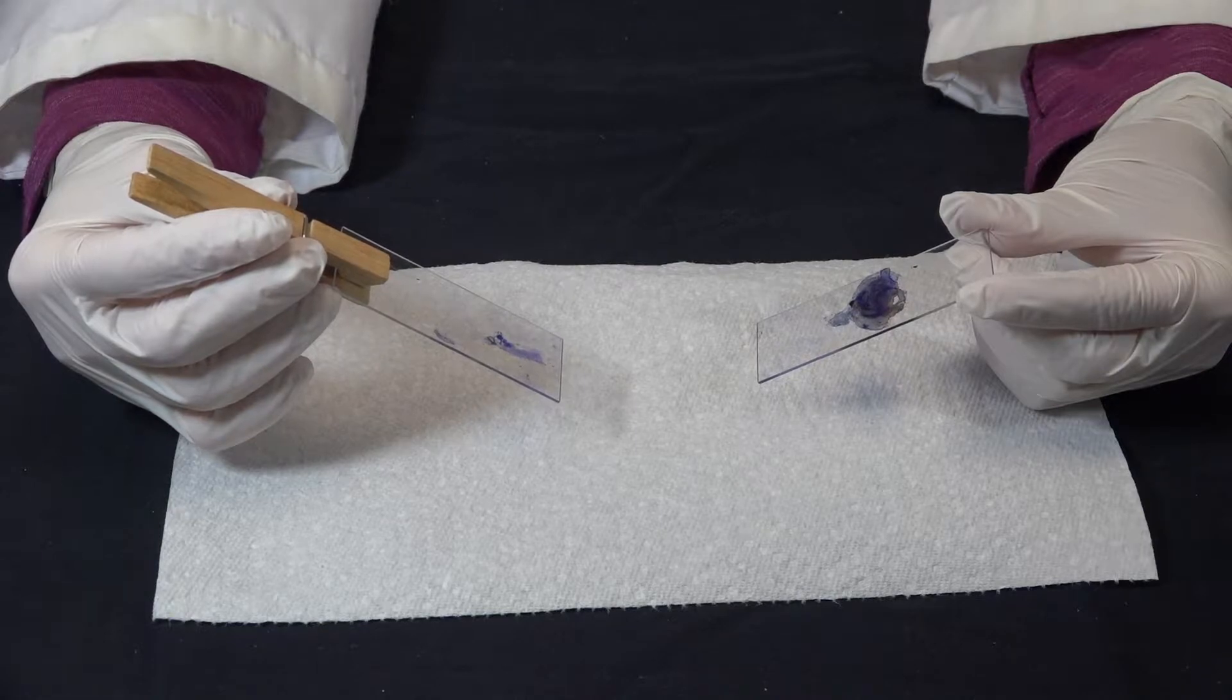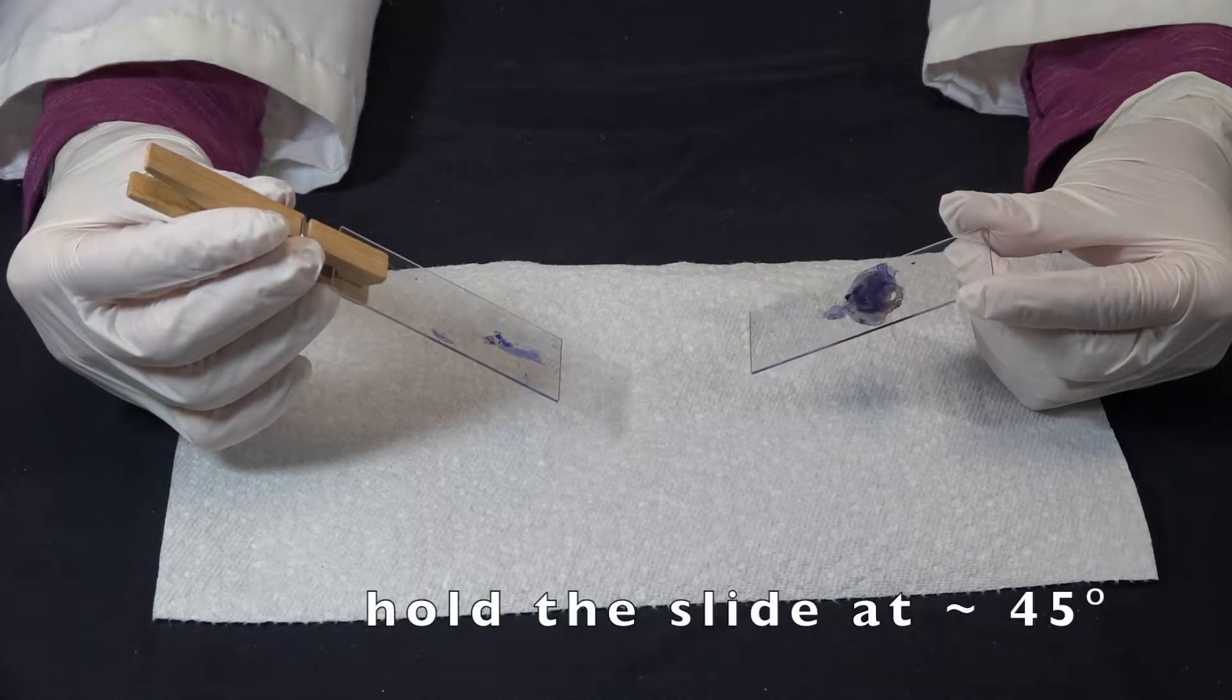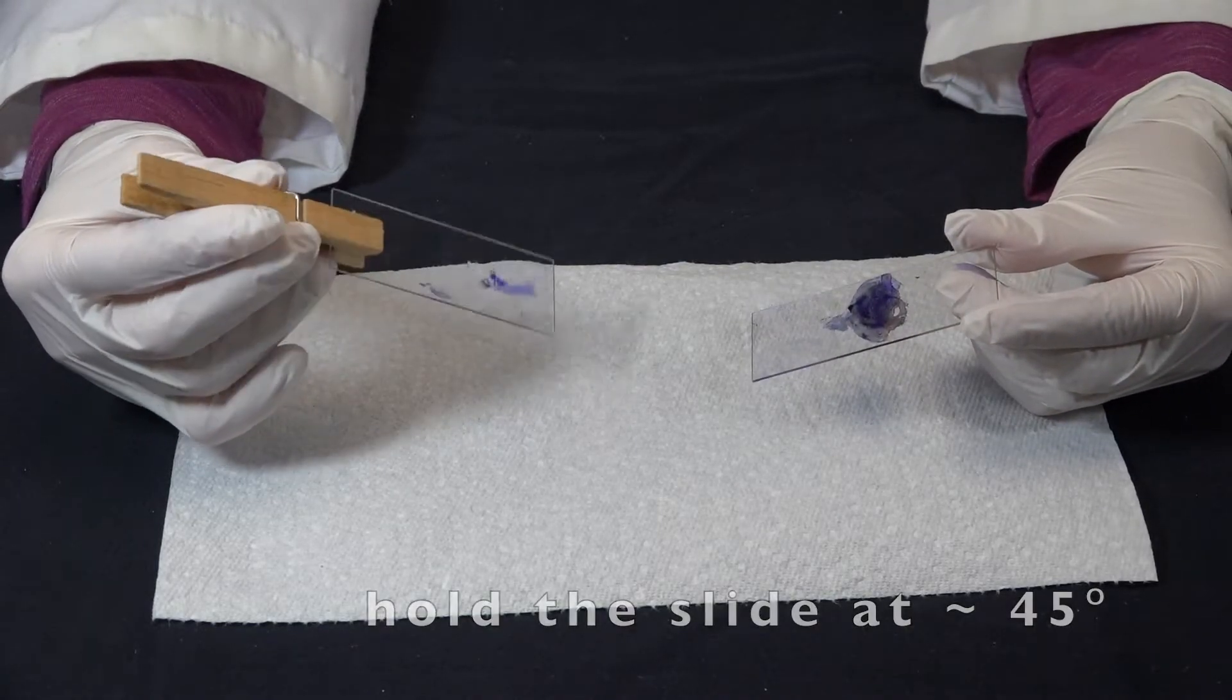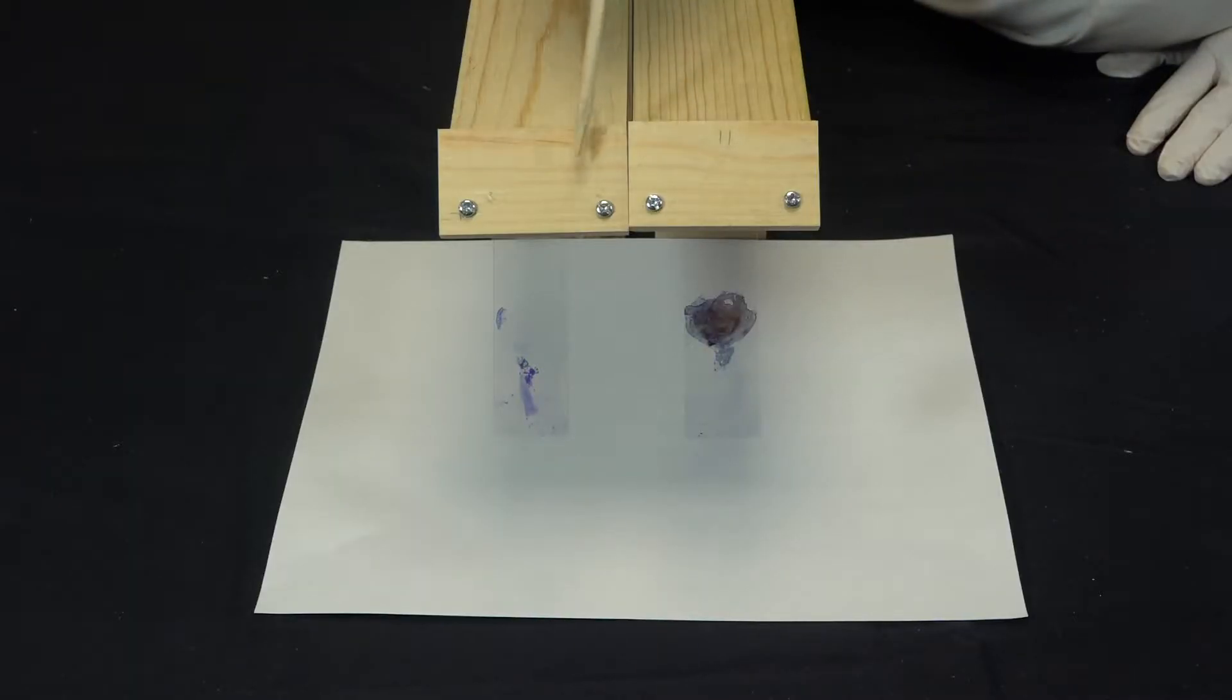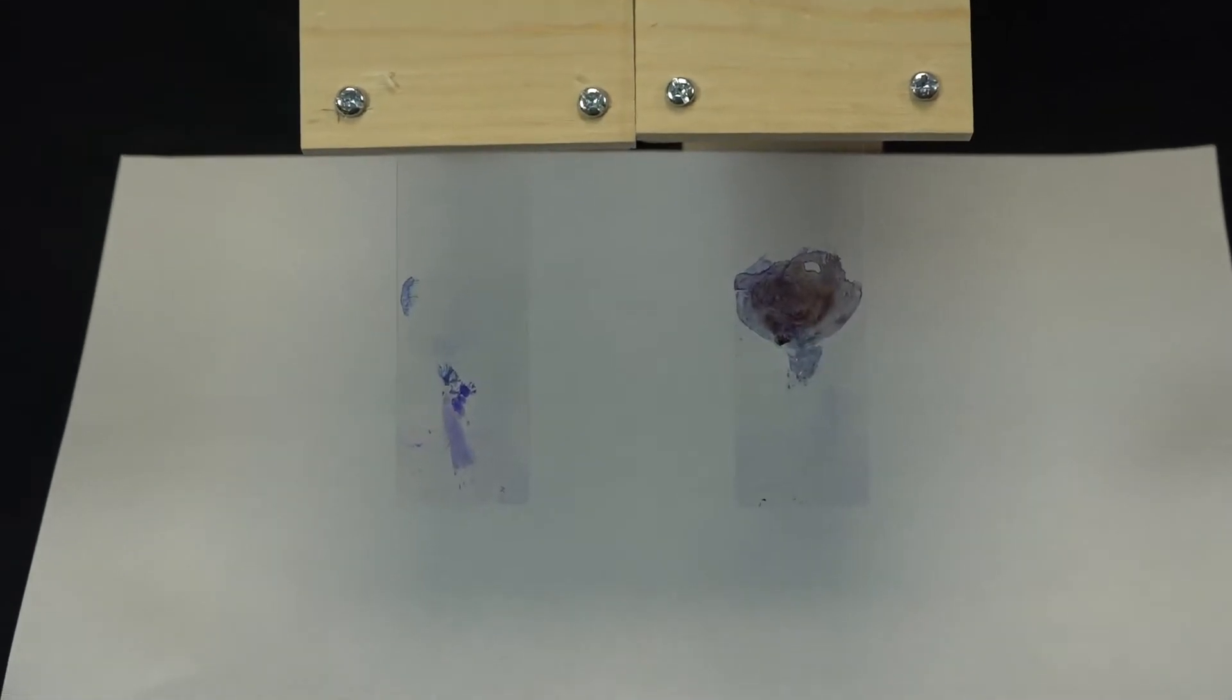Normally, for the decolorizing step, you would hold the slide at a 45 degree angle with your hand or a clothespin. But I've mounted the slides in a special holder to make the decolorizing process easier for you to see. Notice that one smear is much darker than the other.